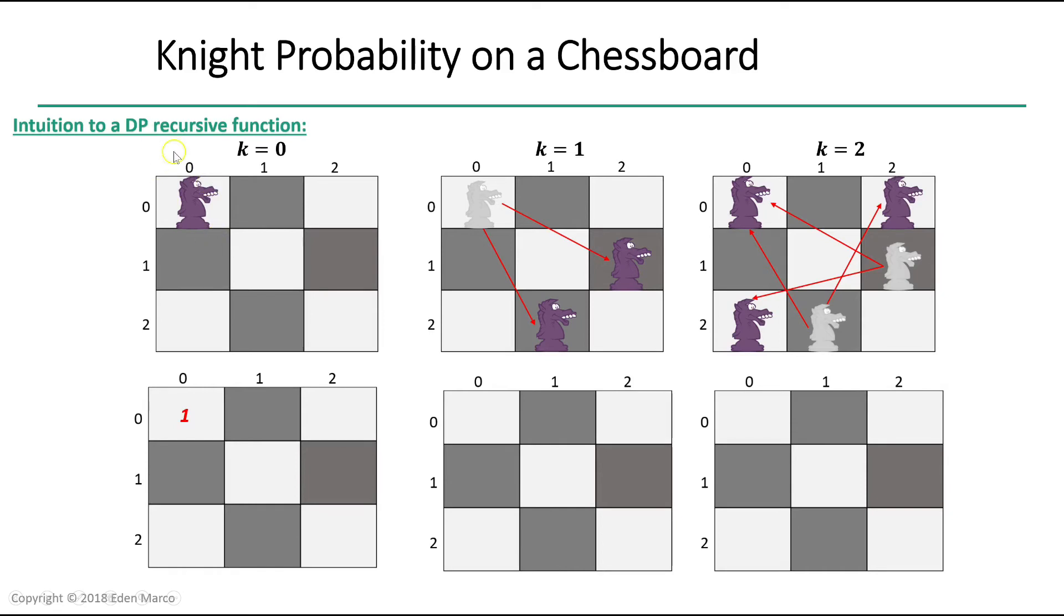If we start at 0, 0, then the probability to stay within our board is 1 because staying at 0, 0 is our only option that keeps us in bounds. Now let's see where we can go within our board and then solve the problem again in one last step. We can go here and here, and the probability to go each way is 1, the probability to be on our current location, times 1 over 8, the probability to go each way. Thus, the probability for each new location is going to be 1 over 8.